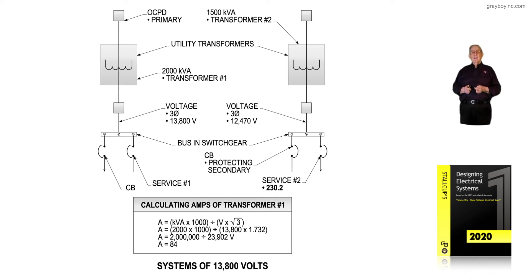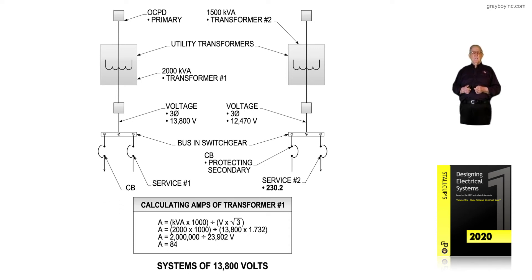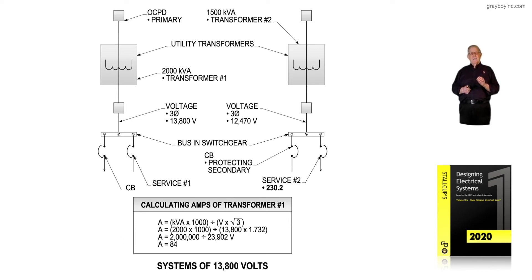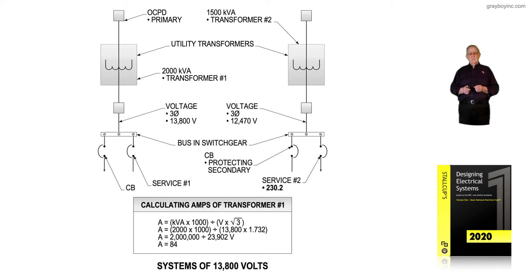To the right we have transformer number two as an example, and it's 1,500 kVA. So we would take 1,500 times 1,000 and divide it by 12,470 times the square root of three to obtain the usable amps. But the main thing about figure 4-9 is it's just illustrating systems of 13,800 volts.